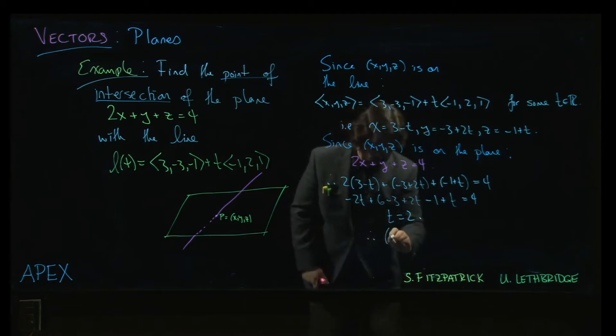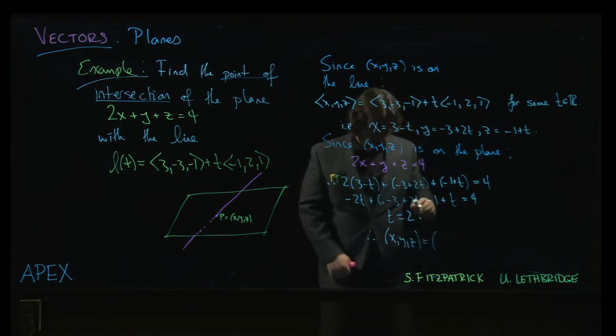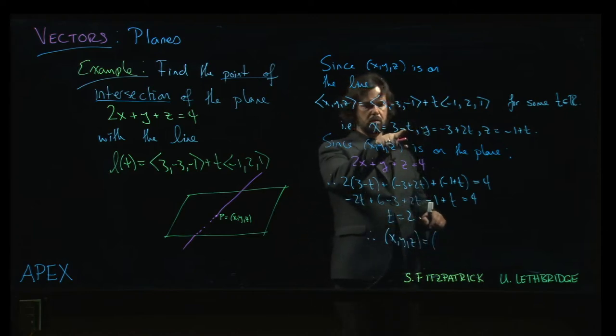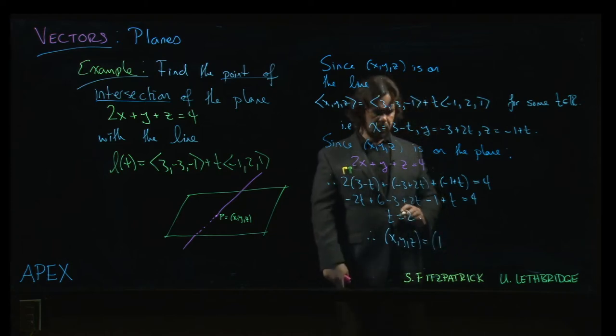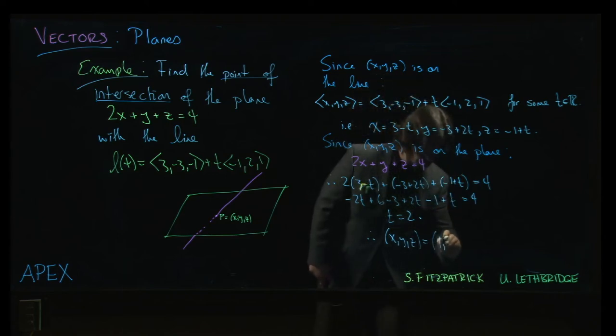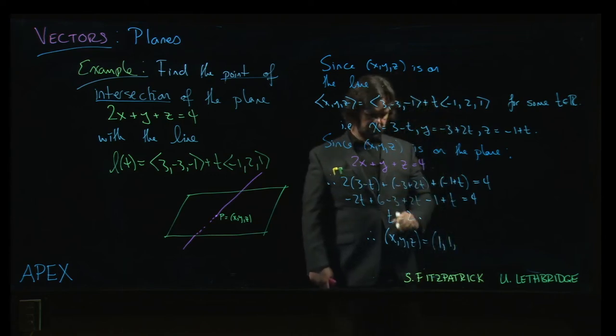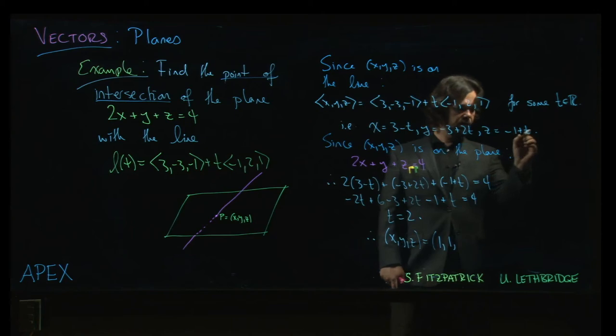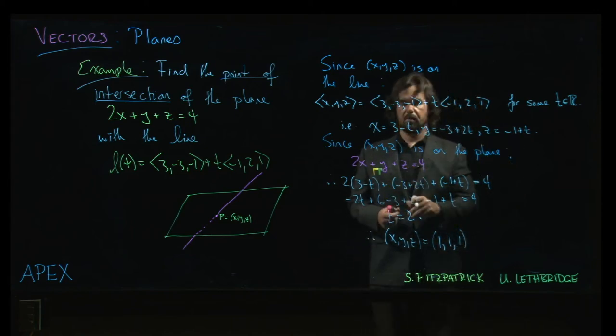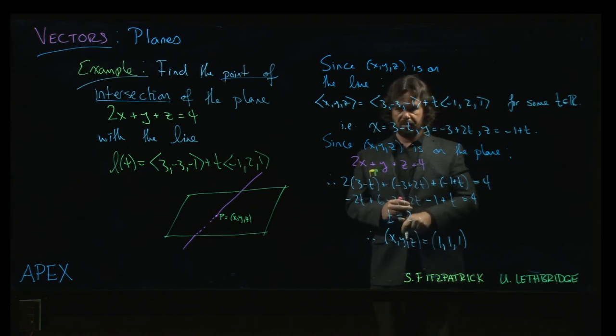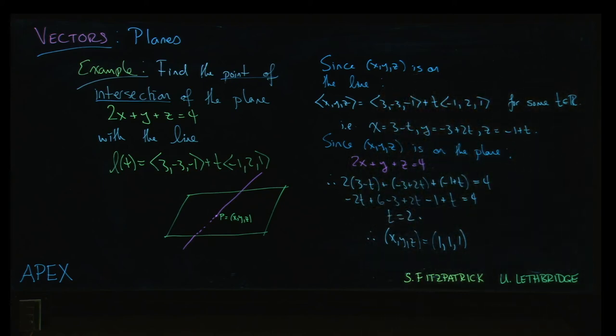So, that means that our point x, y, z will be, if we put t equals 2 in x, 3 minus 2, we get 1. t equals 2 in y, -3 plus 4, it's also 1. And, putting t equals 2 in for z, we get 1 there as well. That's our point of intersection. Thank you.